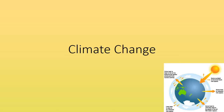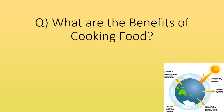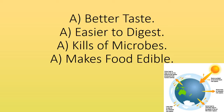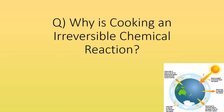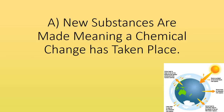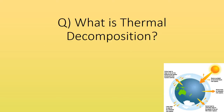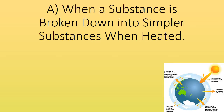What are the benefits of cooking food? Better taste, easy to digest, kills off microbes and makes food edible. Why is cooking an irreversible chemical reaction? New substances are made, meaning a chemical change has taken place. What is thermal decomposition? When a substance is broken down into simpler substances when heated.